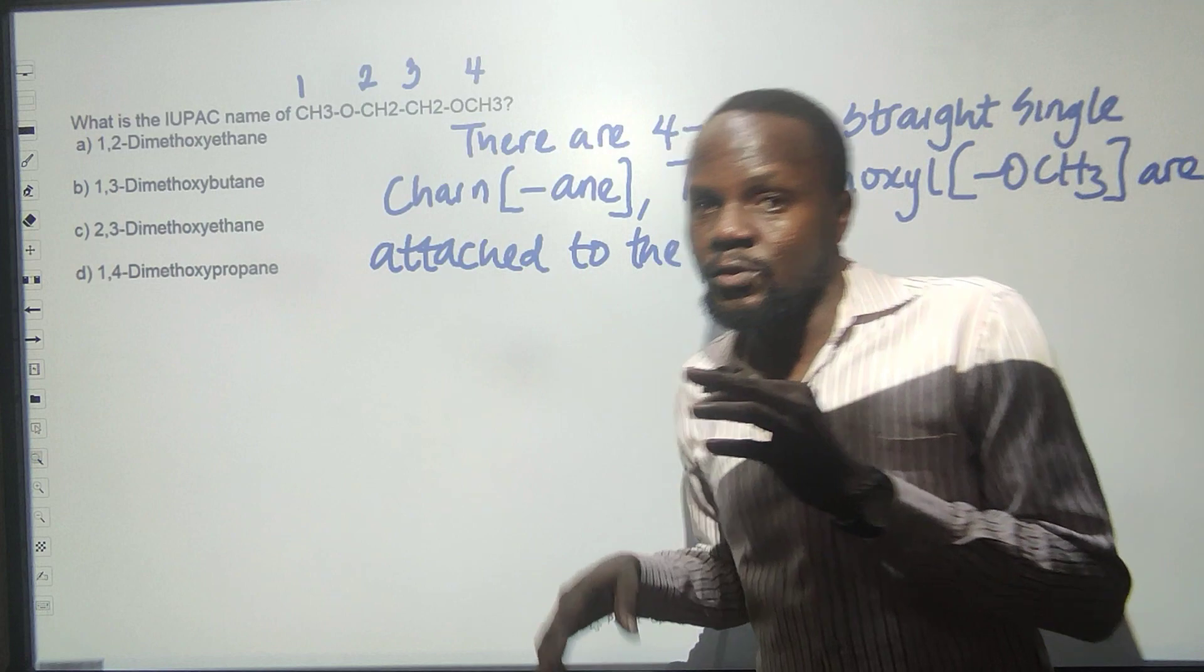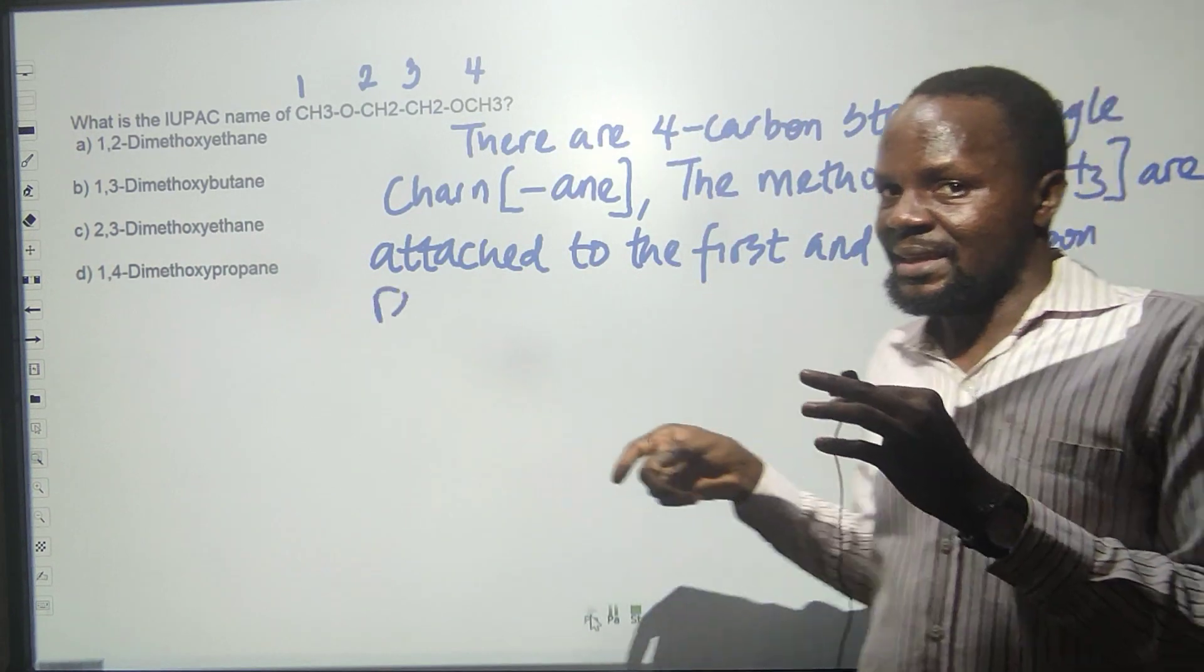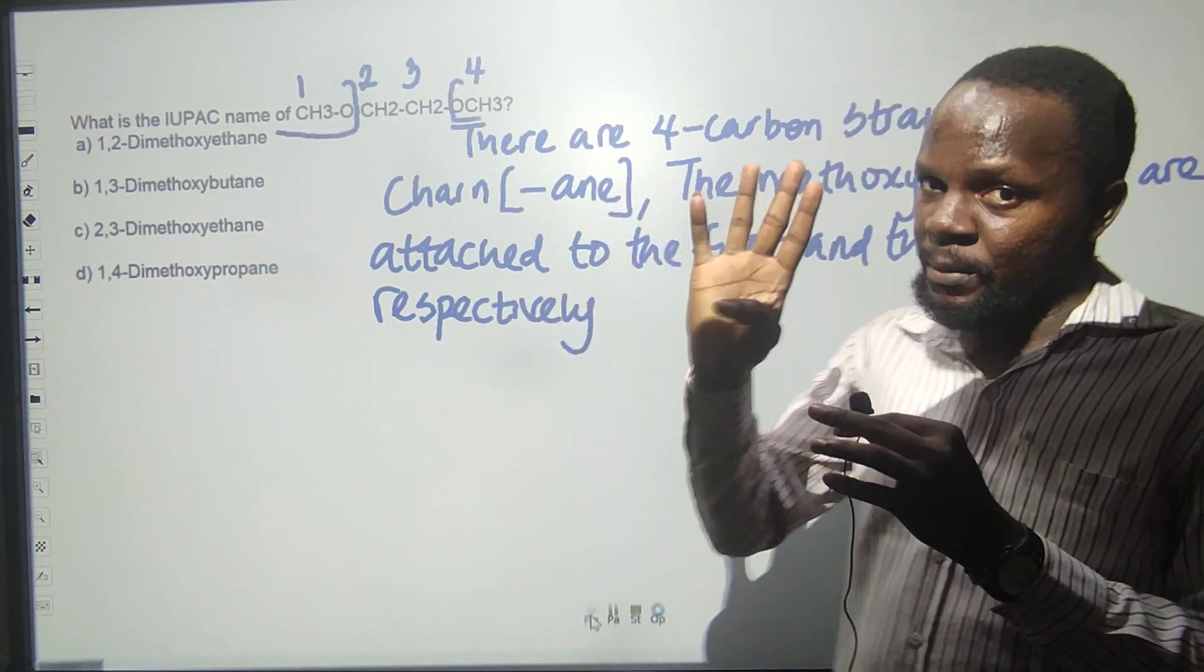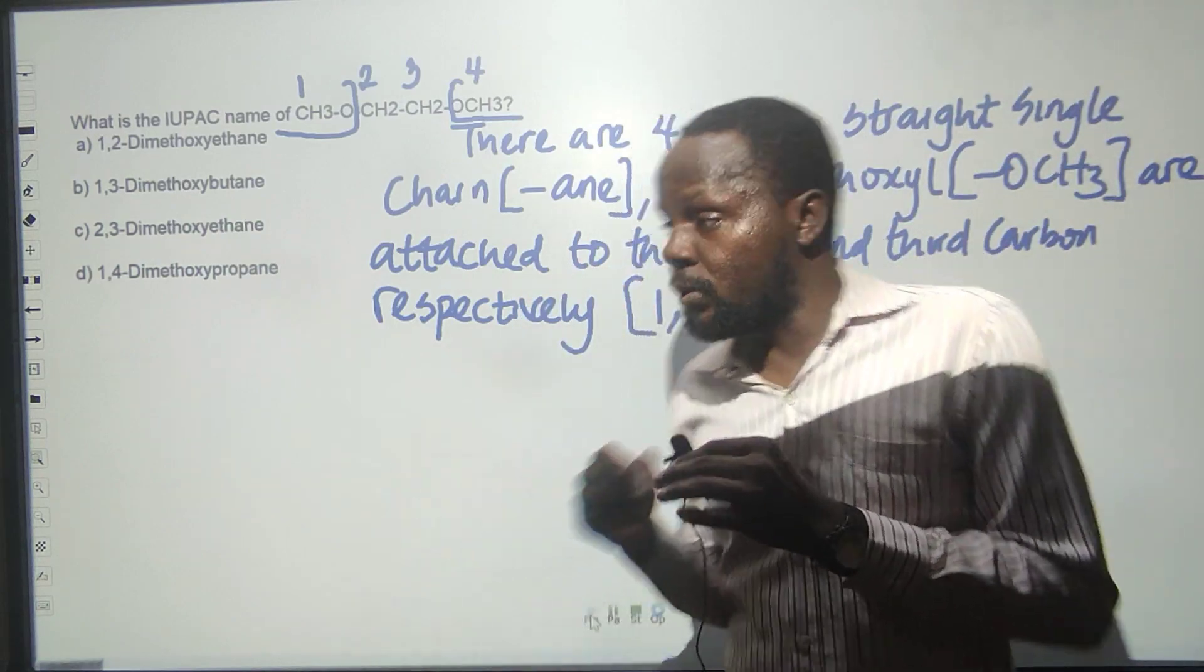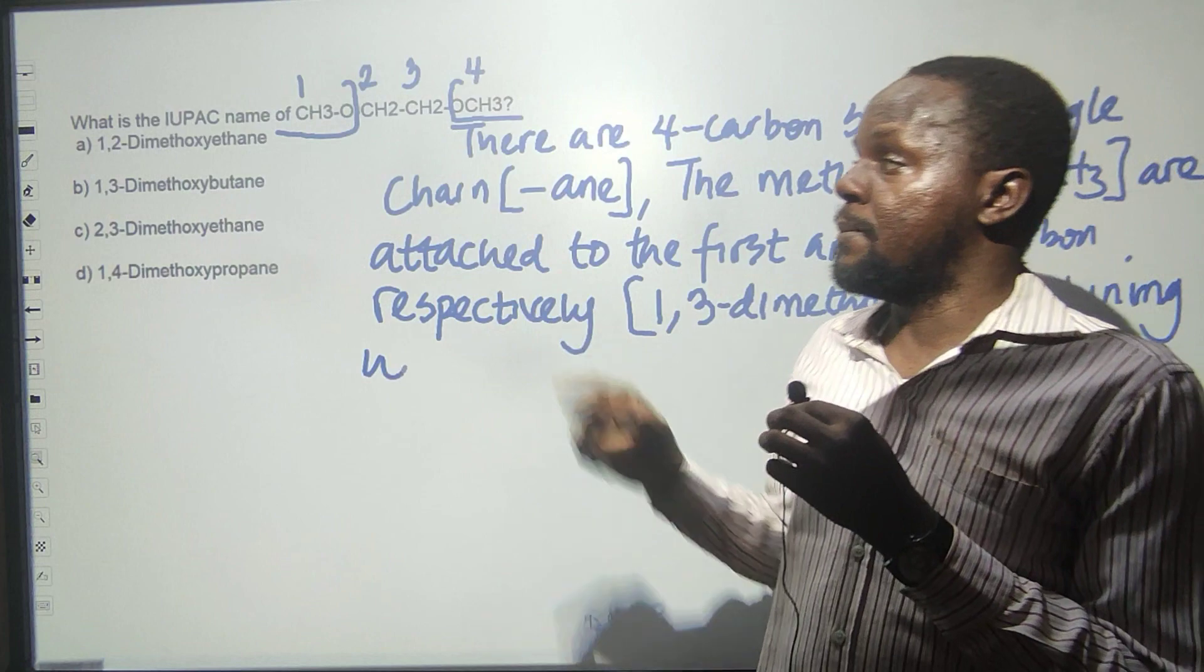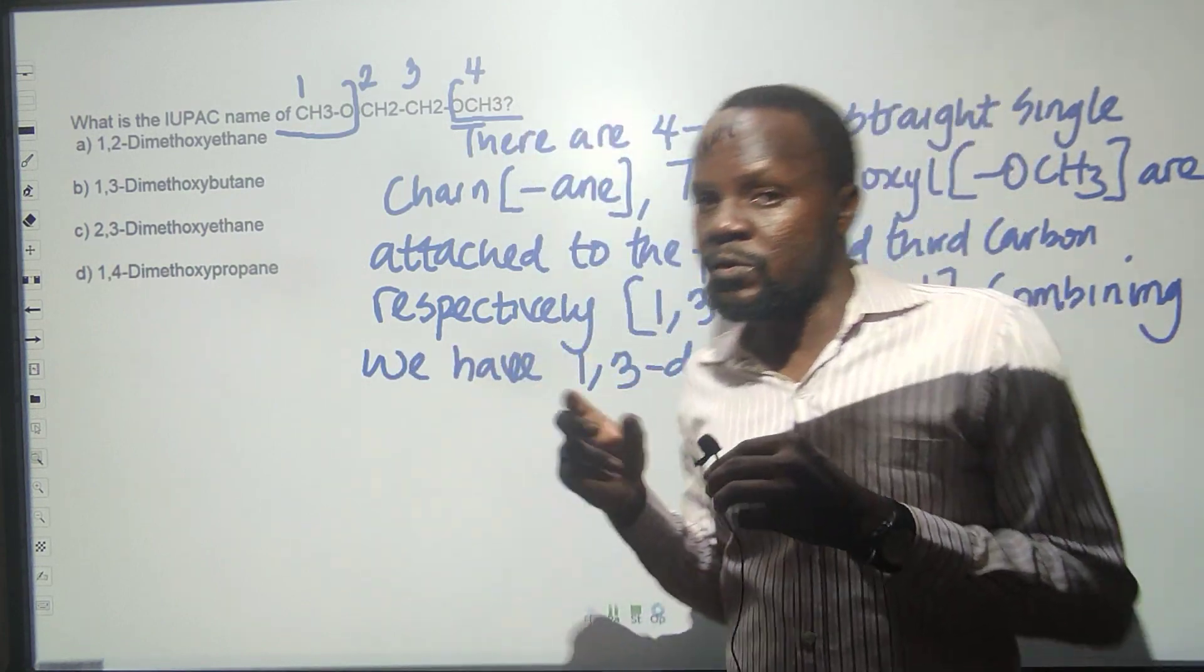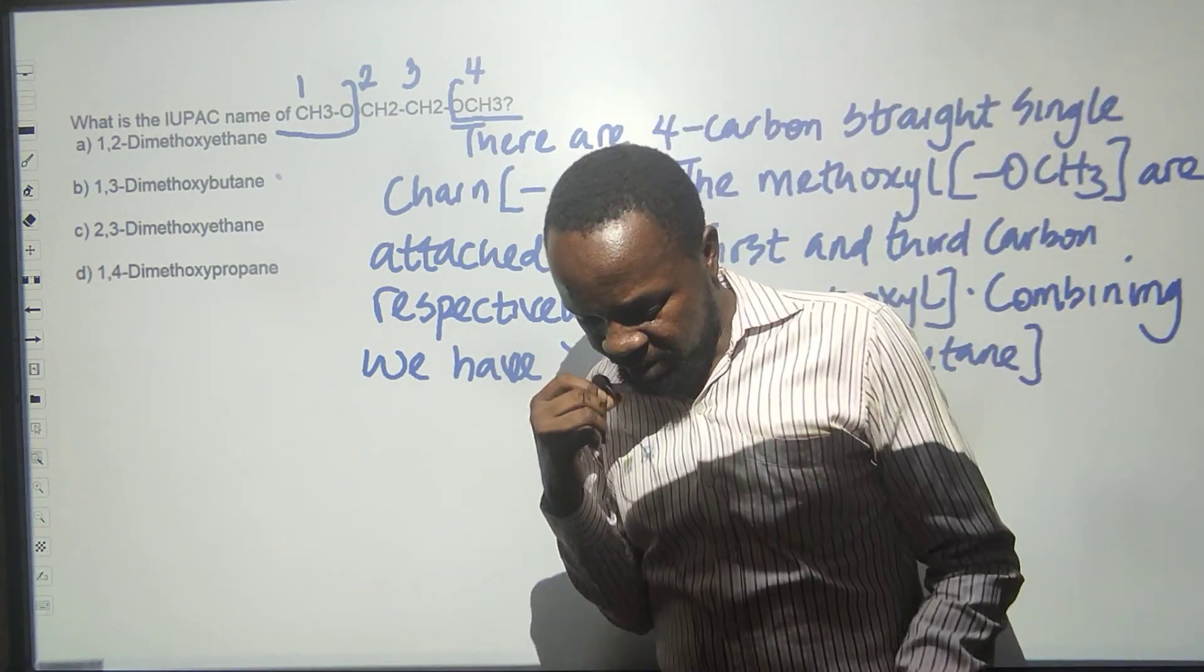So we can say it is butane, so one comma three, then we say 'di' because there are two - dimethoxy. How many carbon atoms? Four carbon atoms. The correct answer is 1,3-dimethoxybutane. Please note that C-O-C-O in between carbon atoms is called alkoxy, also known as ether.